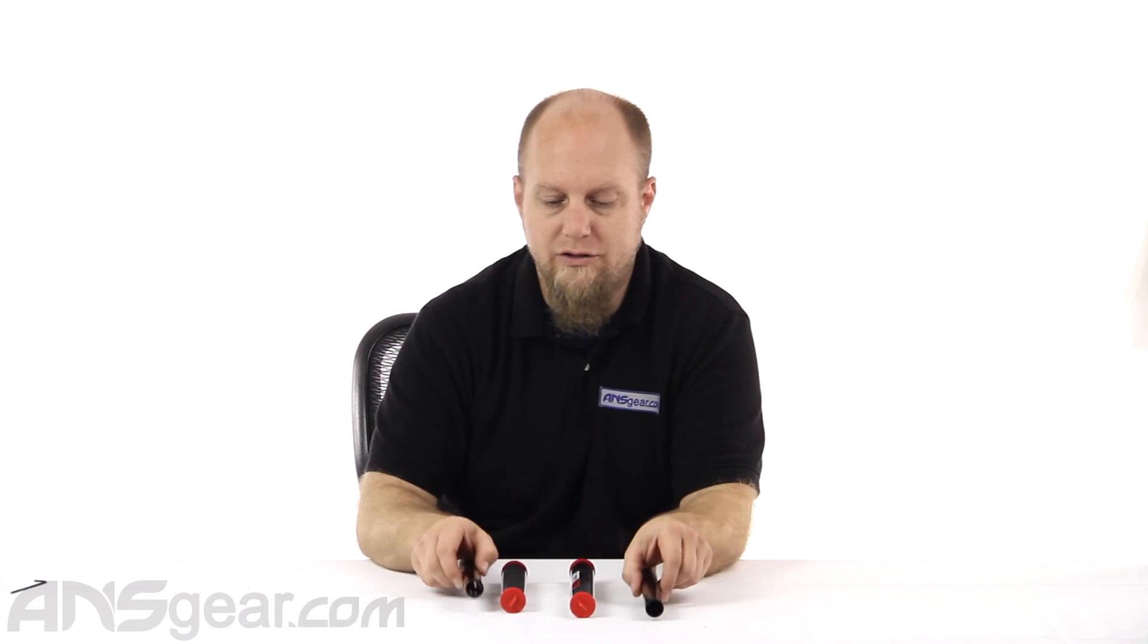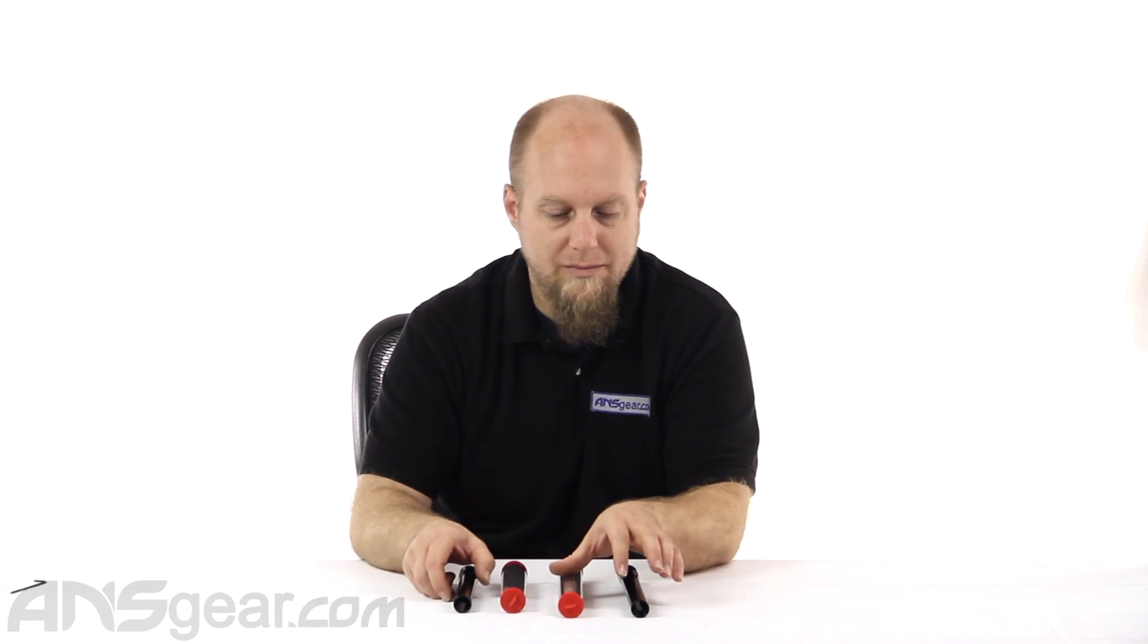So check these out if you already have a Stella kit or you're interested in picking one up. They're fantastic barrel systems. They work great. Lots of options, and these just add to it. Two new versions, slimline fronts in a 14 and a 16, with spiral porting, 689 and 697 bore. Available through the website. Order yours now through ansgear.com.